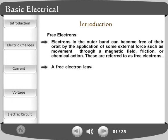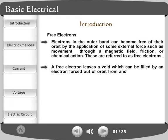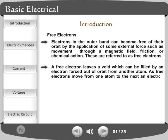A free electron leaves a void which can be filled by an electron forced out of orbit from another atom. As free electrons move from one atom to the next, an electron flow is produced. This is the basis of electricity.